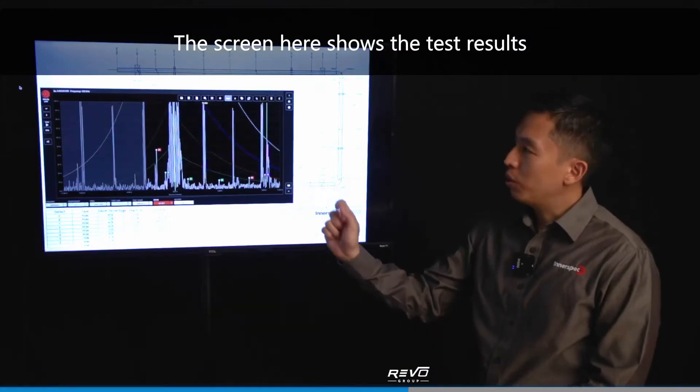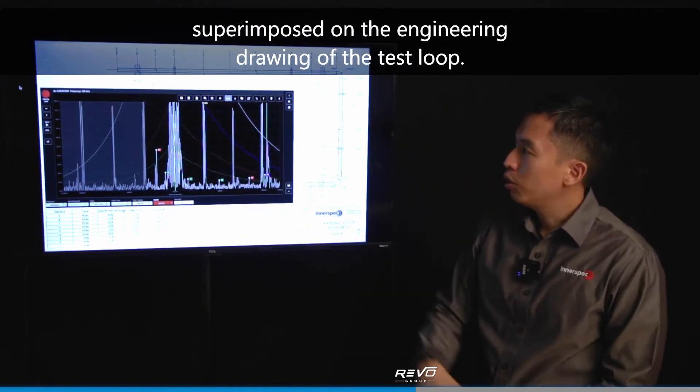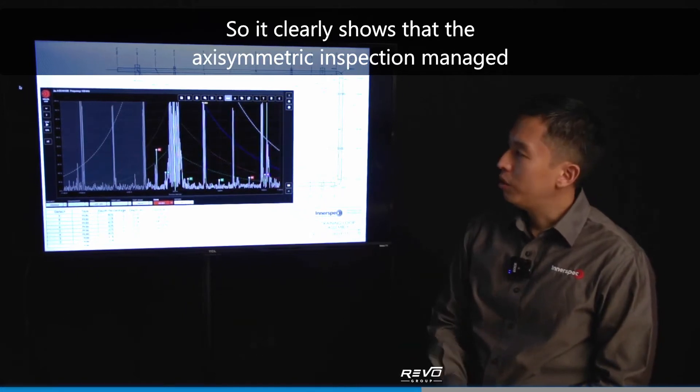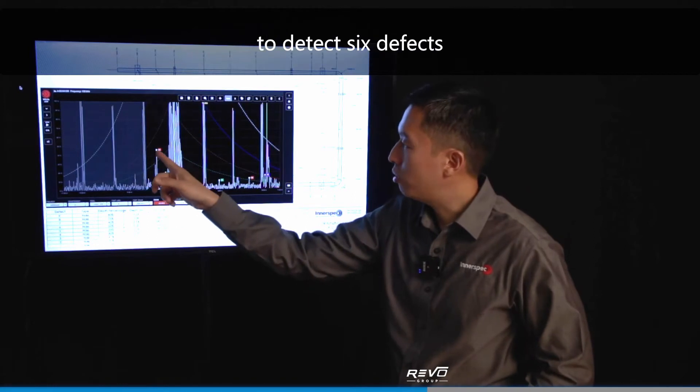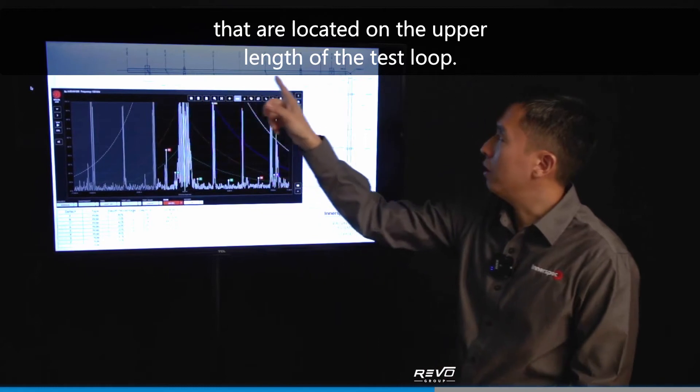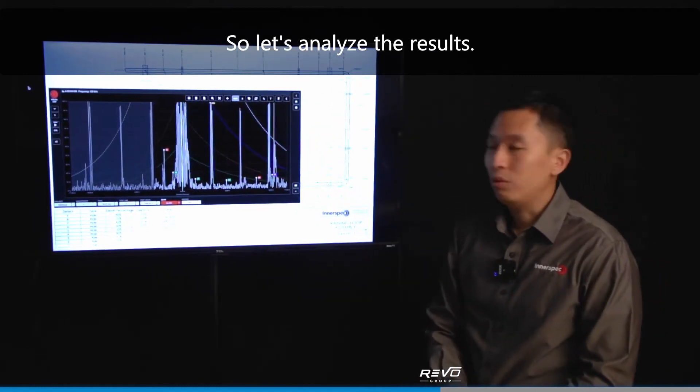The screen here shows the test results from the axisymmetry inspection that we took, superimposed on the engineering drawing of the test loop. So it clearly shows that the axisymmetry inspection managed to detect six defects that are located on the upper length of the test loop. So let's analyze the results.